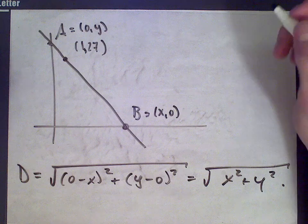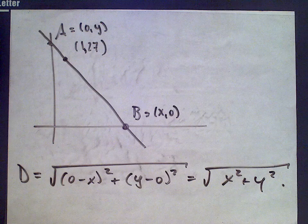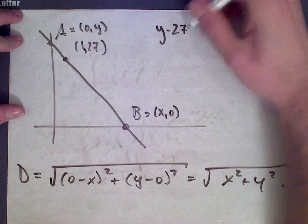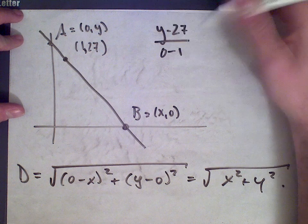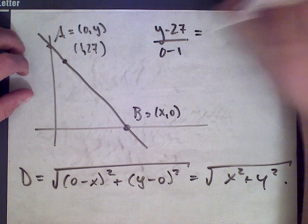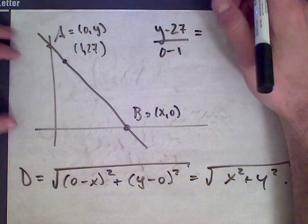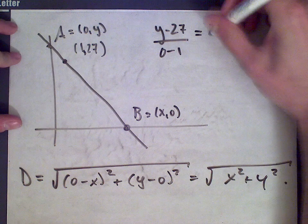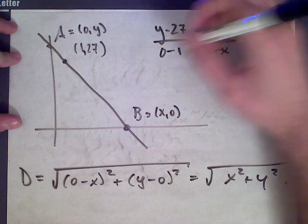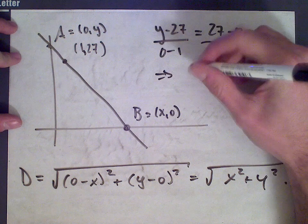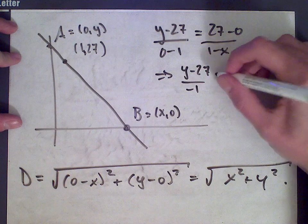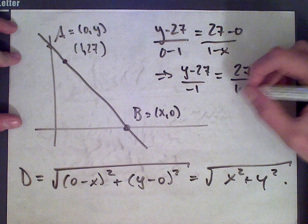These two slopes should be the same since we're calculating the slope of the same line. We get (y minus 27) divided by (0 minus 1), calculating the slope using A and (1, 27), and that should equal the slope using (1, 27) and B, which is (27 minus 0) over (1 minus x). Simplifying, we get (y minus 27) over negative 1 equals 27 over (1 minus x).